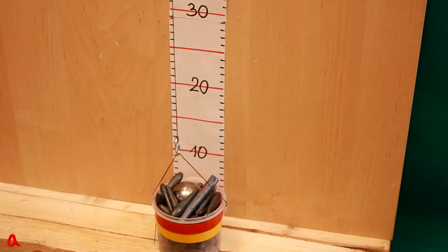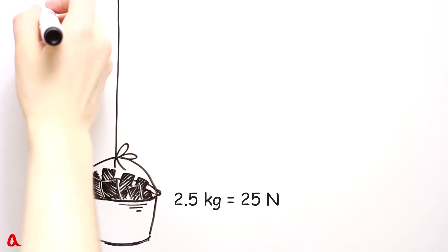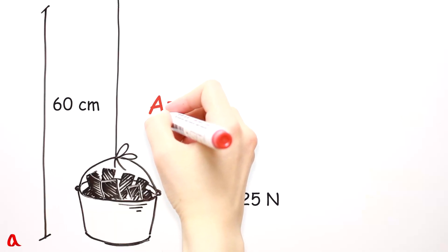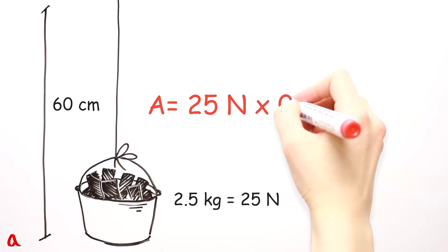This load weighs two and a half kilos, that is 25 newtons. We're going to lift it to 60 centimeters. To find the work necessary to lift the load, we have to multiply the force of 25 newtons by the displacement of 0.6 meters. We get 15 joules of work.